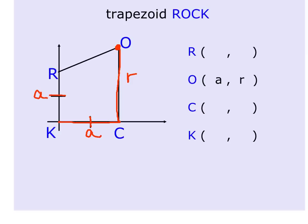Let's start with R. Since R is on the y-axis, we're just going straight up, that's the point (0, a). And C, we're just going straight across on the x-axis, so that is the point (a, 0). And K, obviously, is at (0, 0).